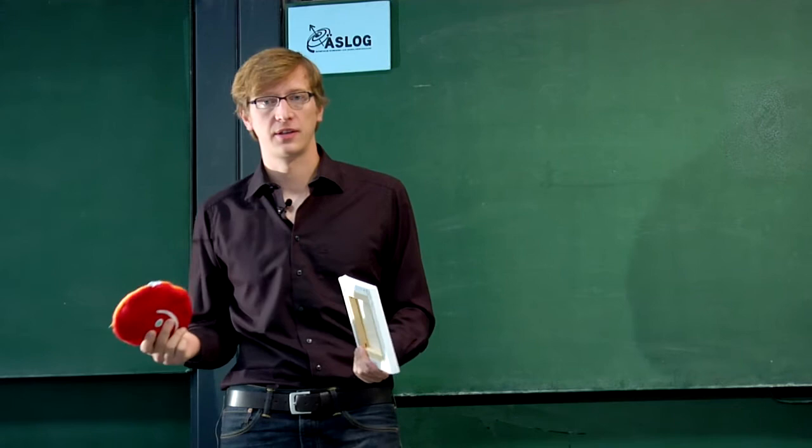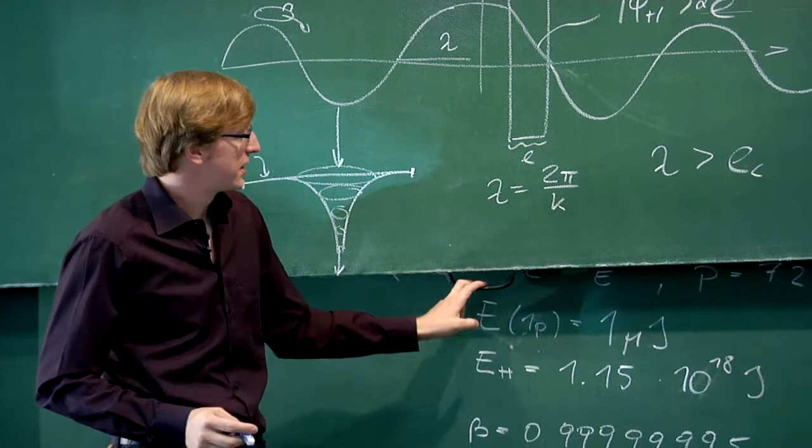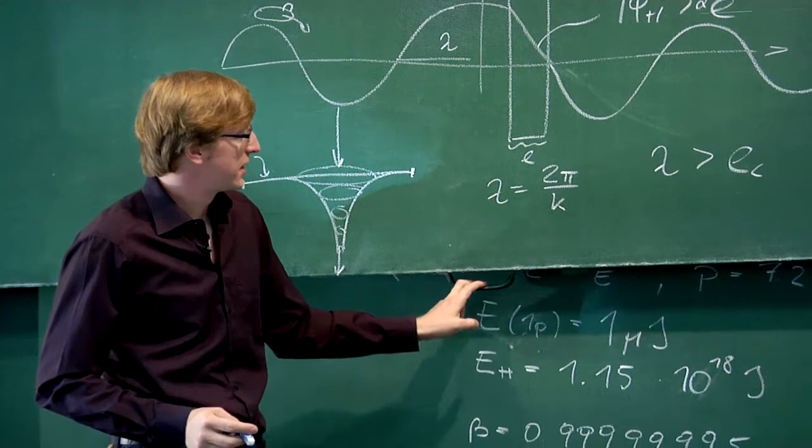The hamster consists of many protons and some neutrons. But all of them together can just build one wave function. Which means that you have to have the energy of this wave function and of the hamster exactly right to get it to tunnel through it. Otherwise it will be just deflected from the canvas.